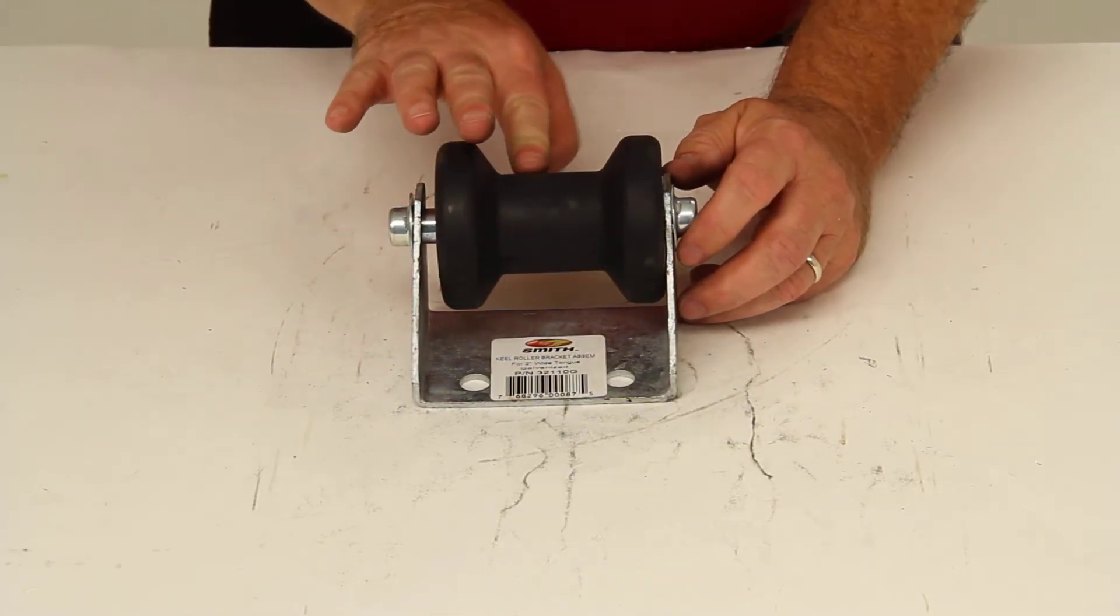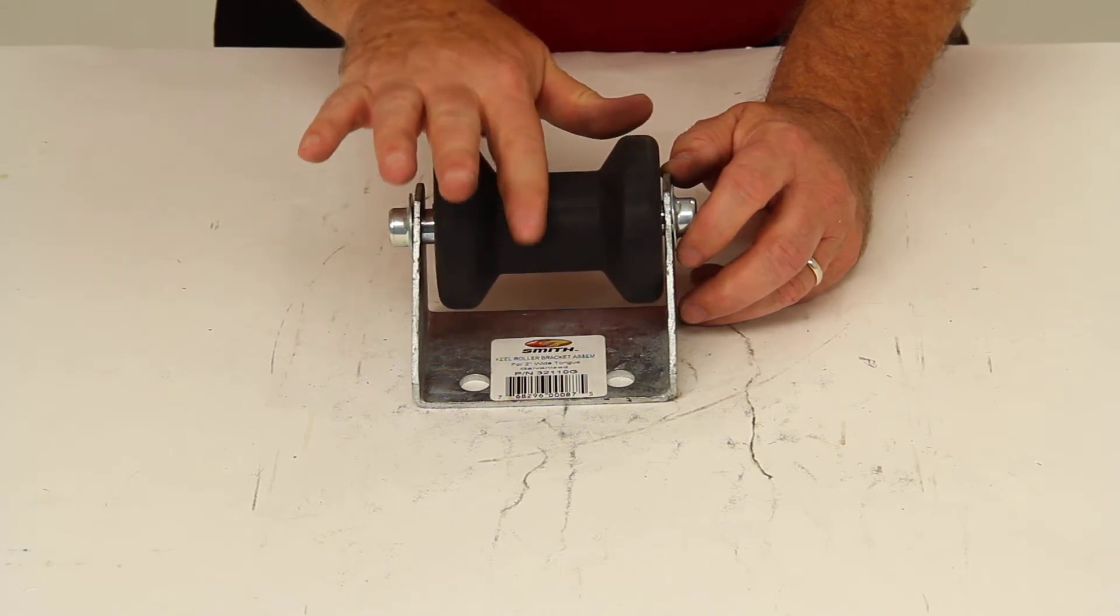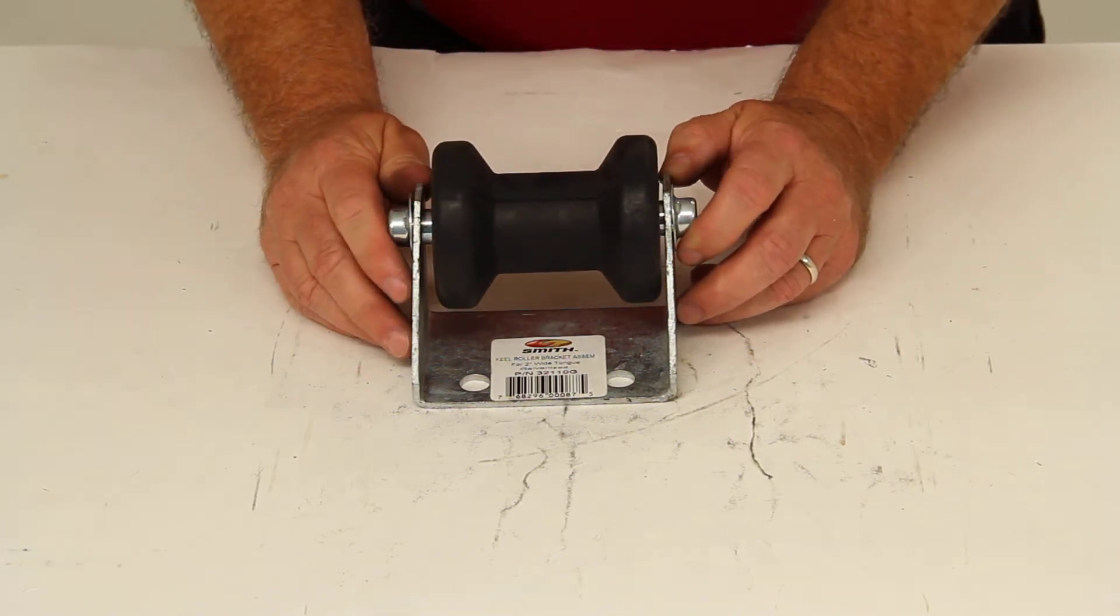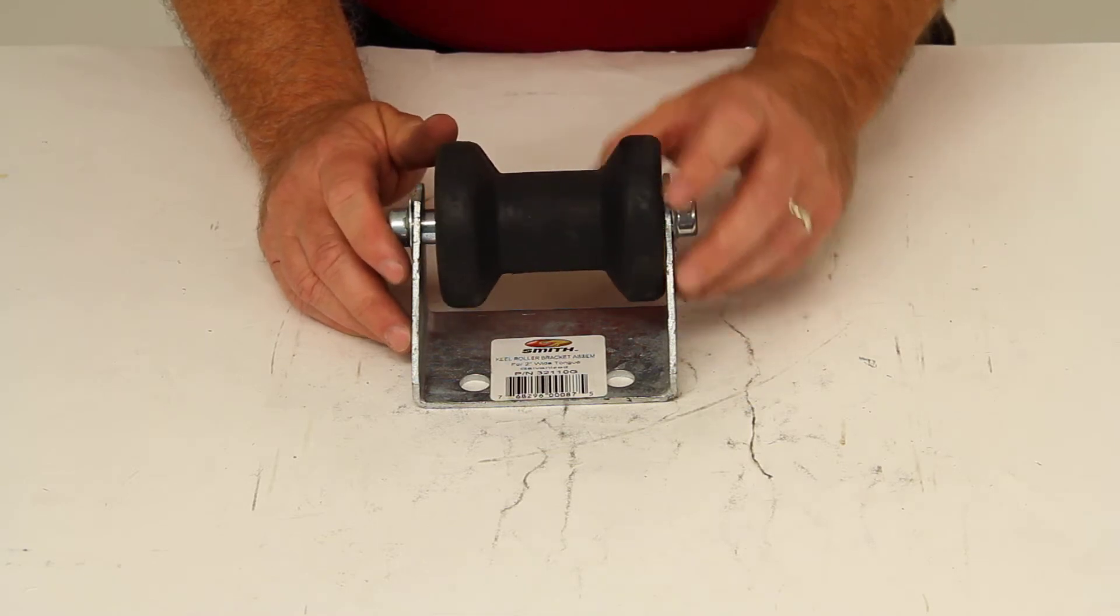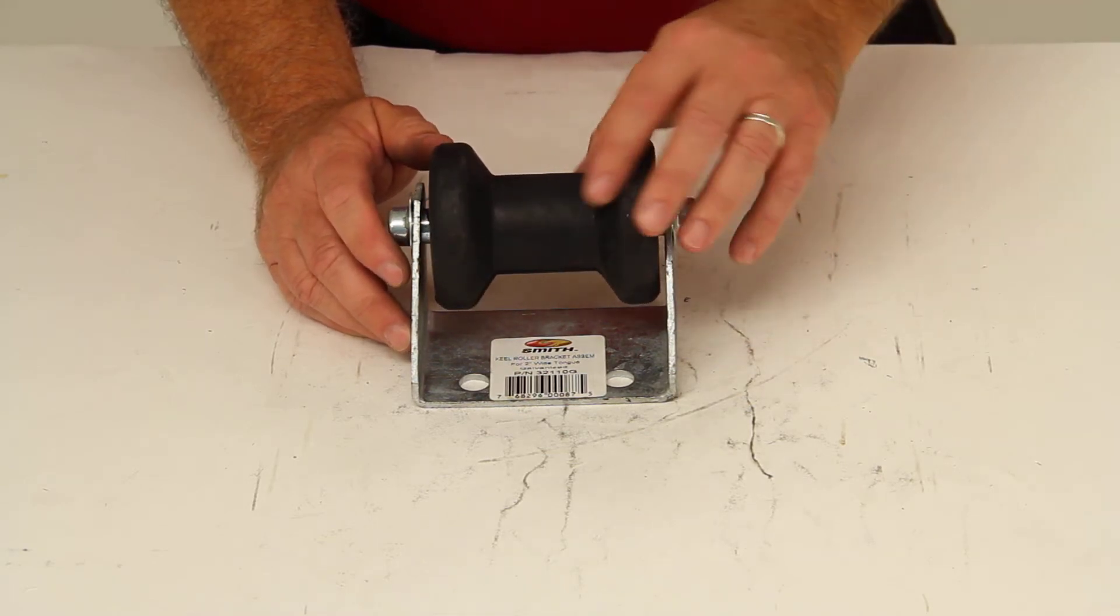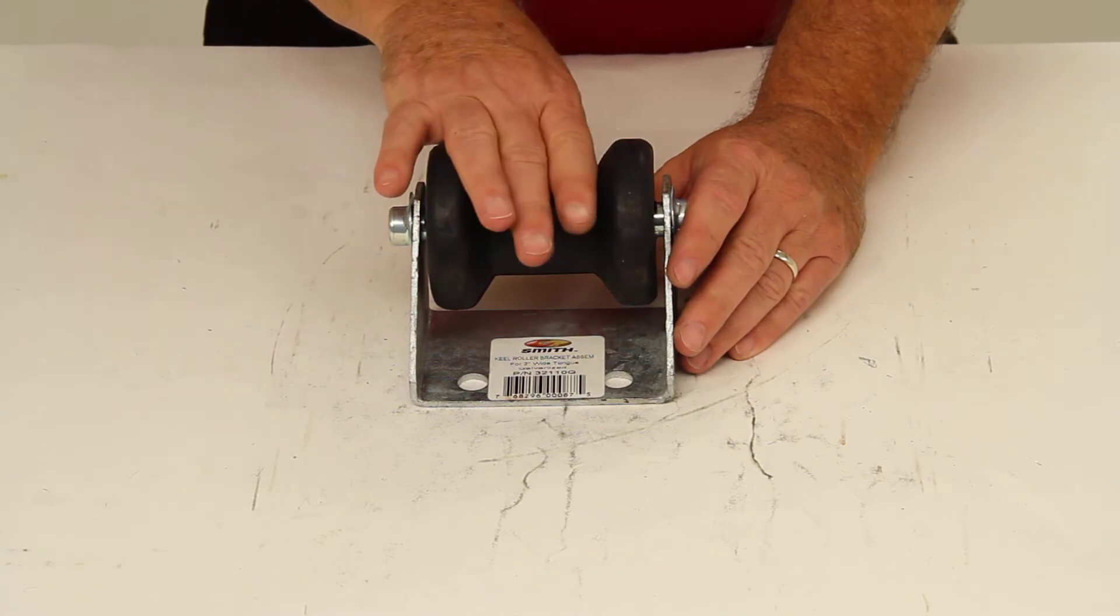The spool roller supports your boat's keel as it sits on the trailer, prevents the bow of the boat from making contact with your winch, and eases loading and unloading of the boat. It will also help absorb road shock while the boat's being trailered.